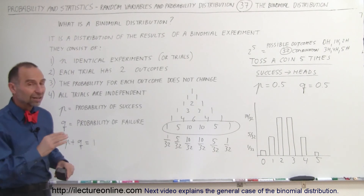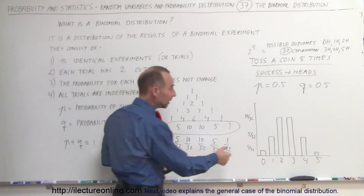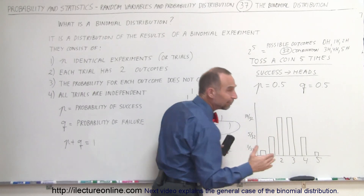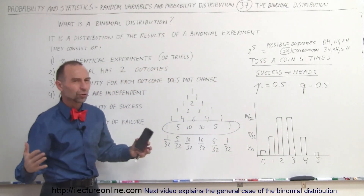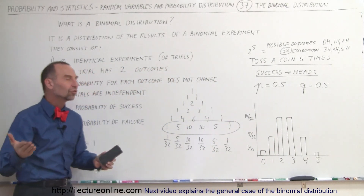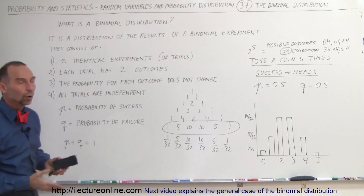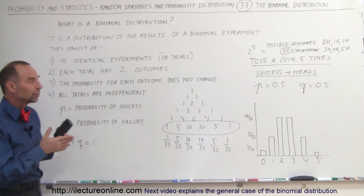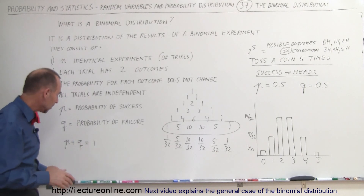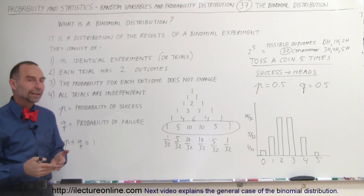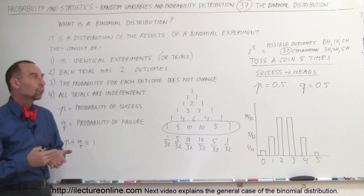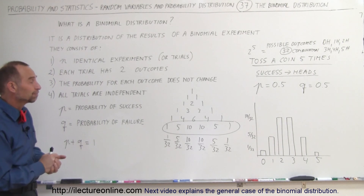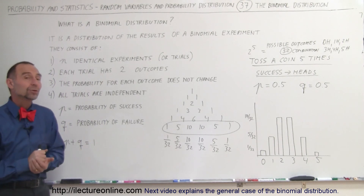Notice that if you add up the area of each bar, you get a total of 1, because the total area underneath the curve should equal 1 — the total of all possible probabilities equals 1 when you add them all up. And so that's what we call a binomial distribution for tossing a coin 5 times. That's how we do that.